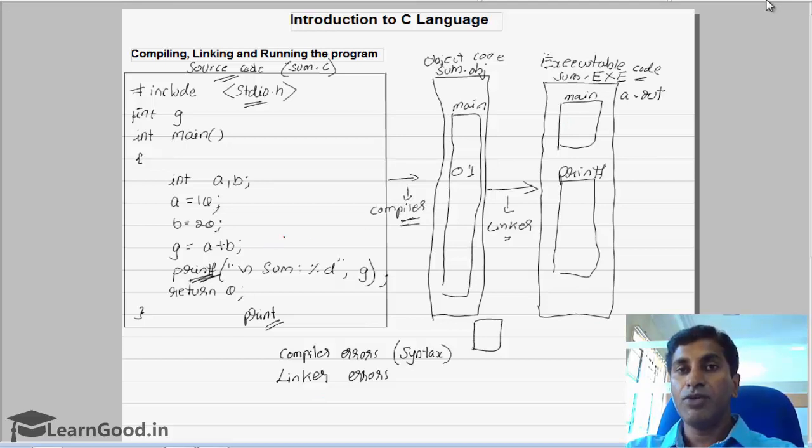Rather than giving g equals a plus b, you might have given g equals a divided by b. Let's assume that b value is equal to 0. That means you're trying to divide 10 by 0. In such cases, you will get a runtime error. You cannot divide any number by 0. During execution of the program, such errors are called runtime errors.